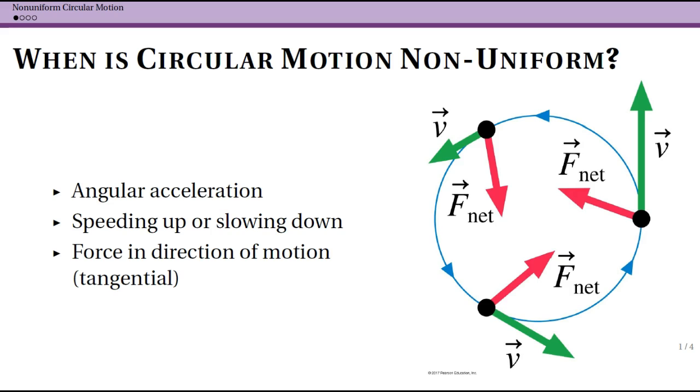There are a few keywords to look for to know that you have non-uniform circular motion. One is any situation where you've been told that there is an angular acceleration. Remember that angular acceleration is alpha, which represents a change in angular speed over a time interval.